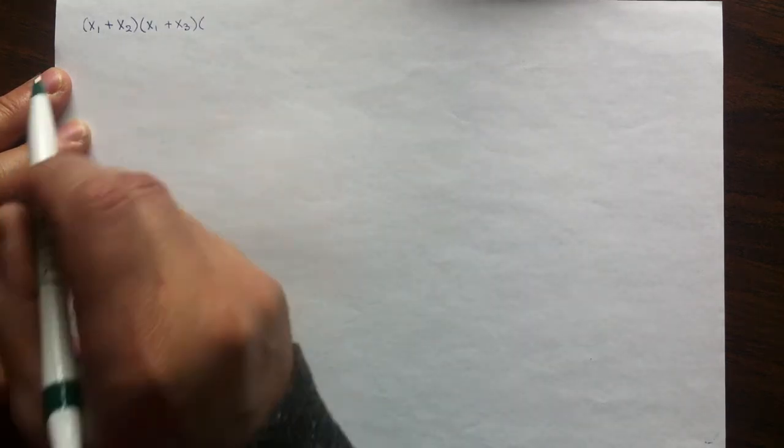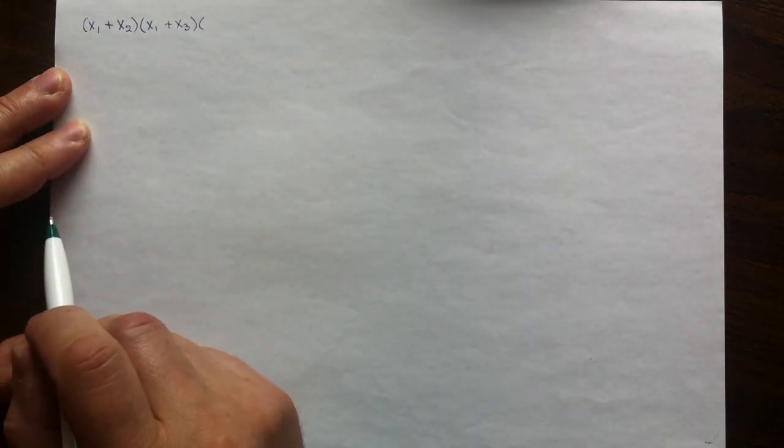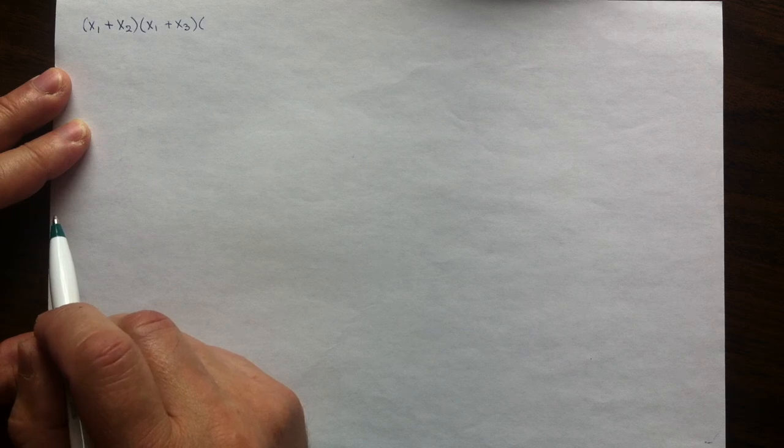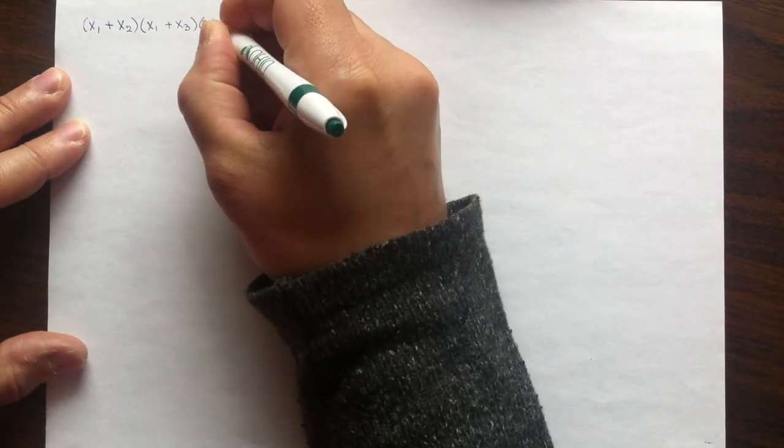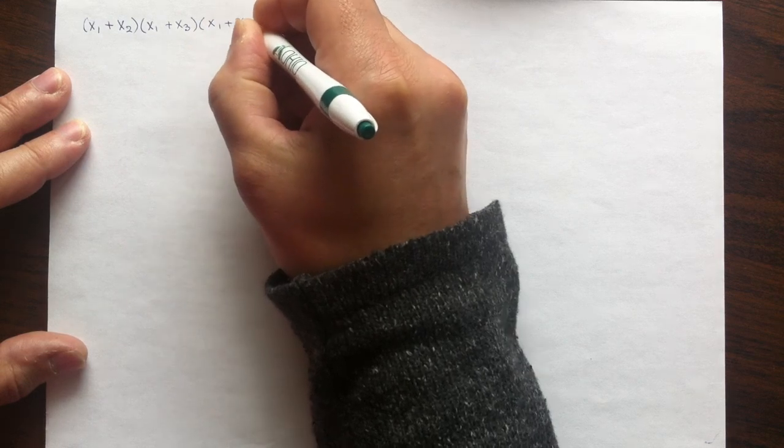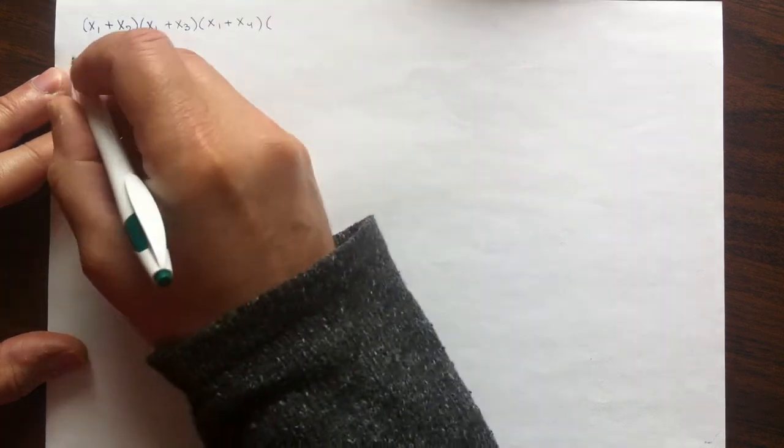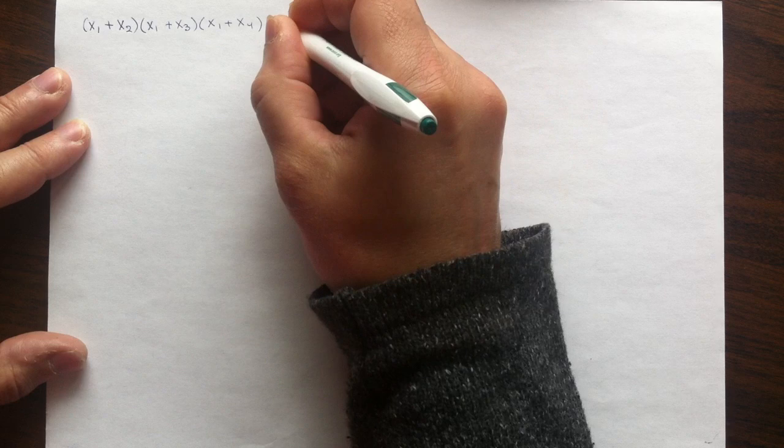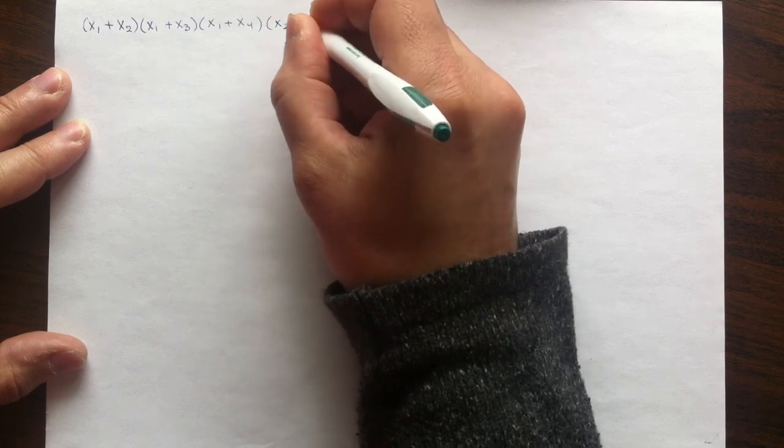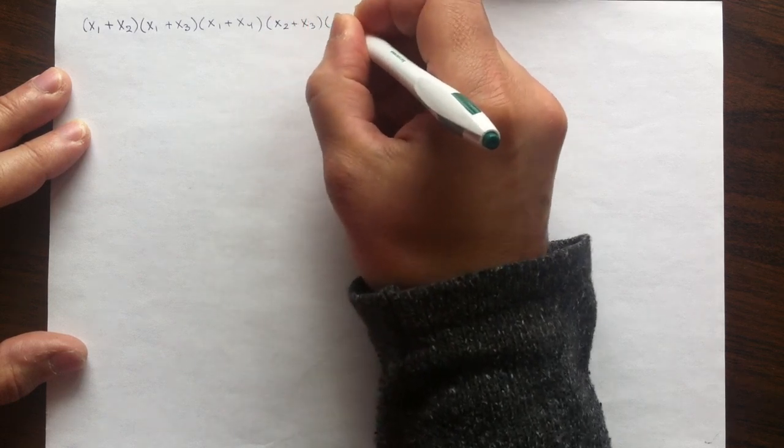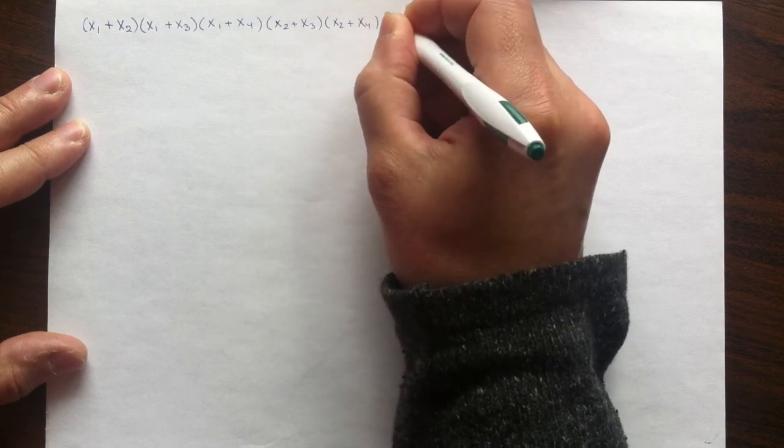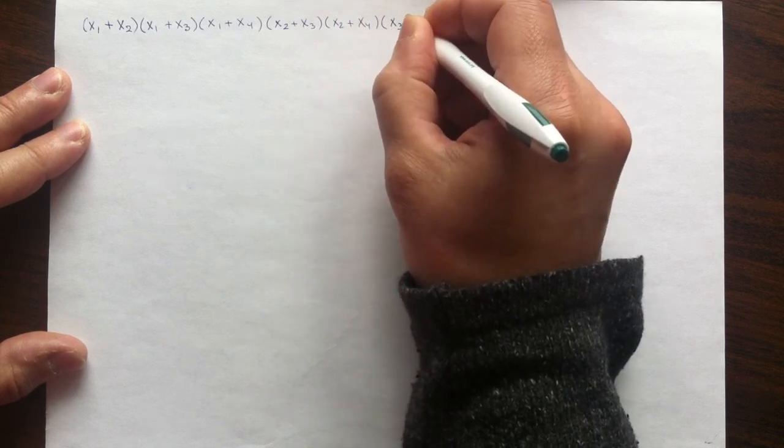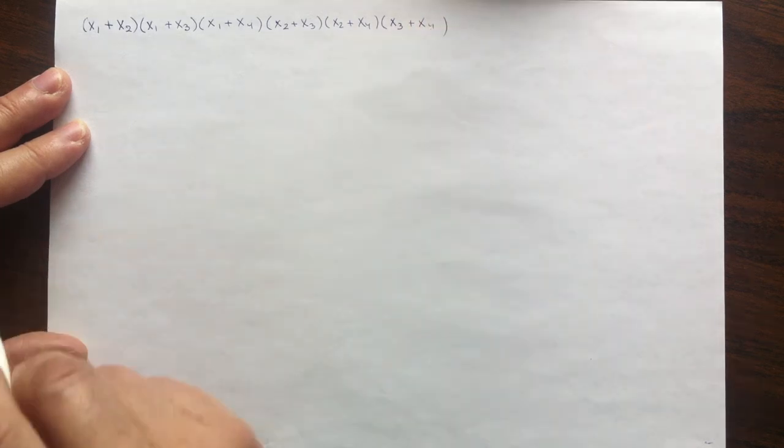So the number of possible sums of two variables will be choosing two out of four, which will be six, and here they are. Three will contain x1, then two more will contain x2, and then there will be one left with x3 and x4.